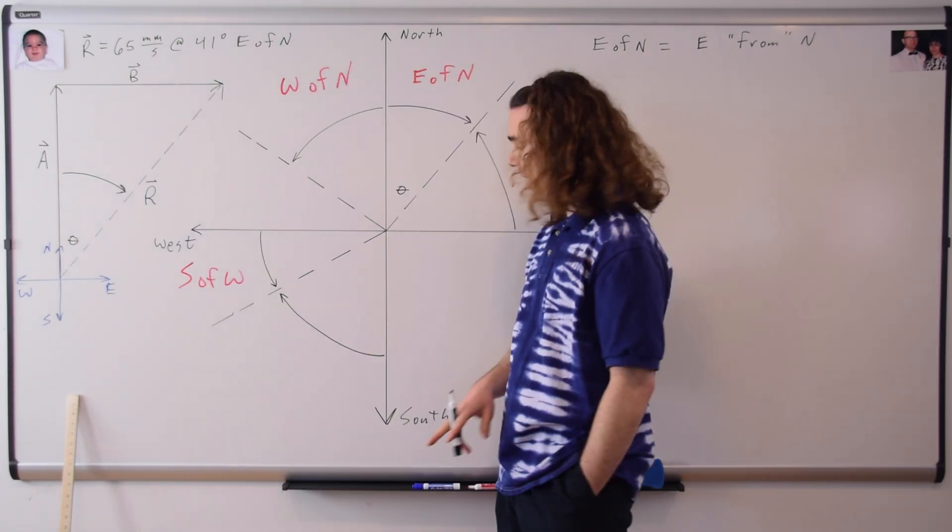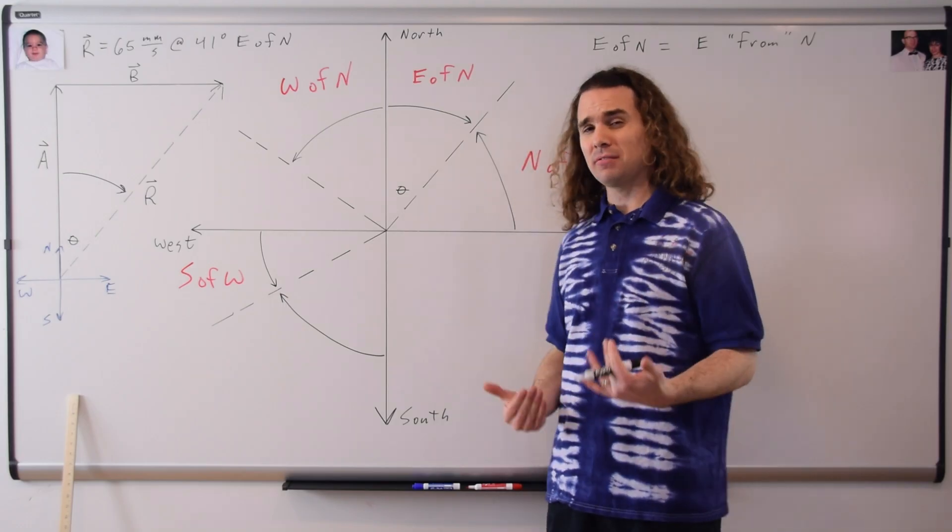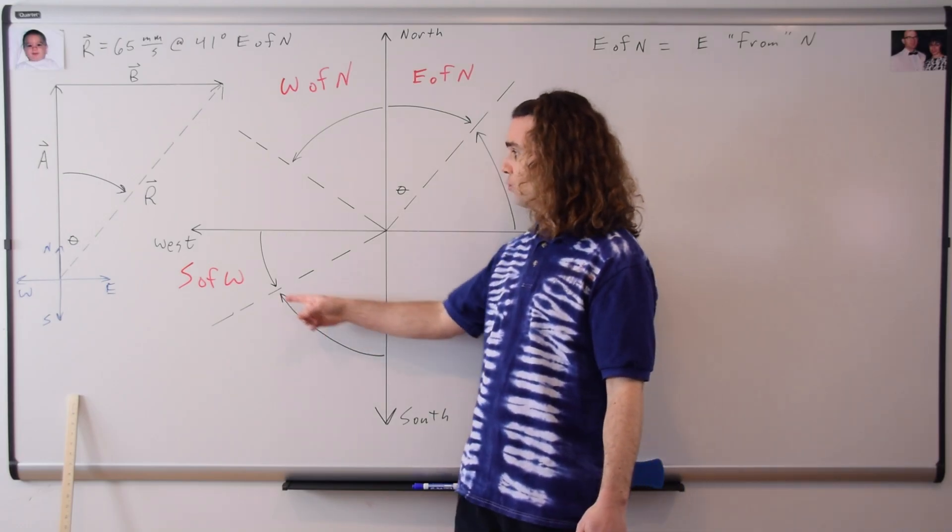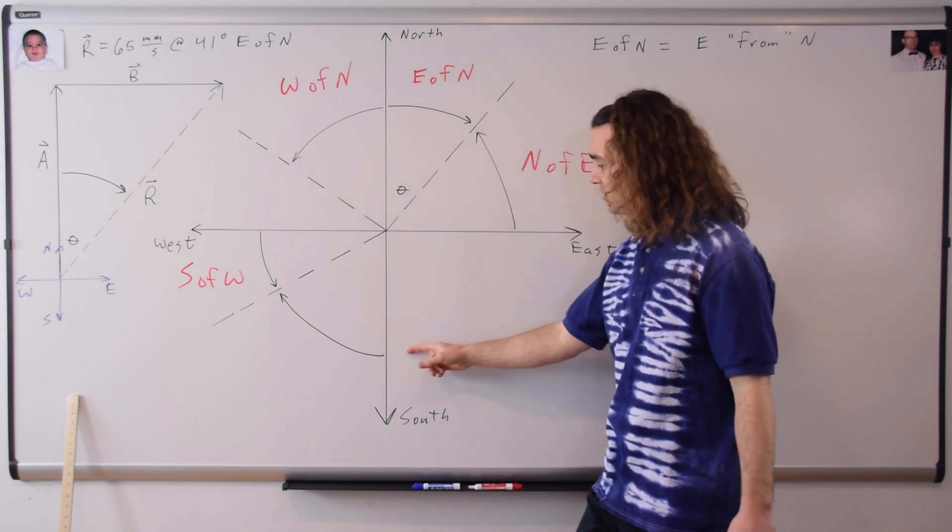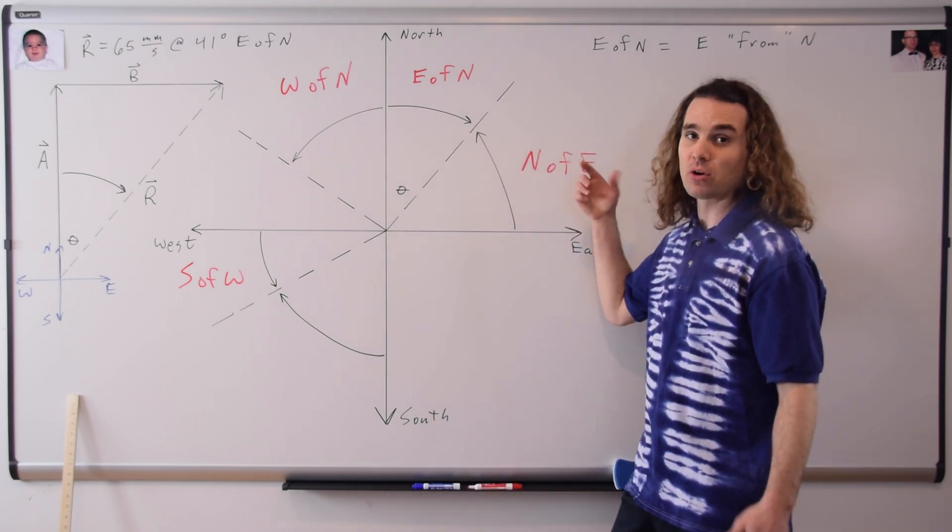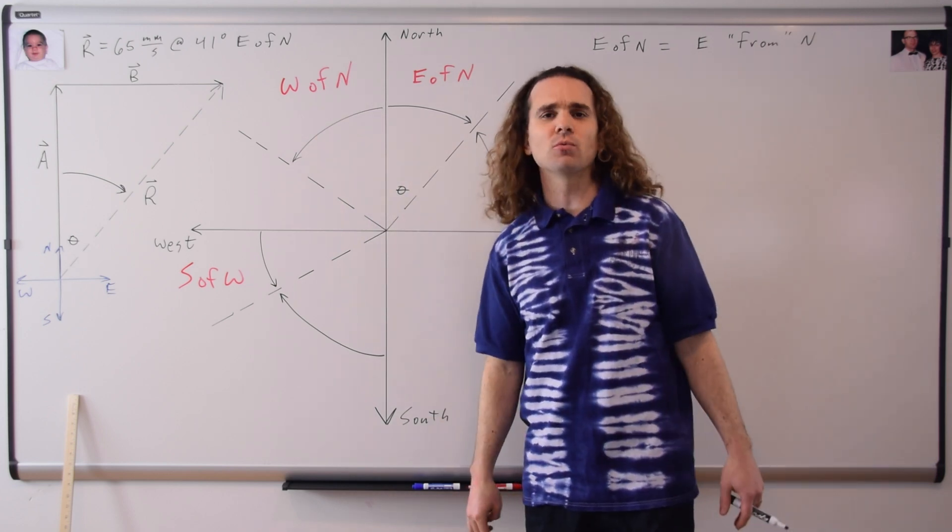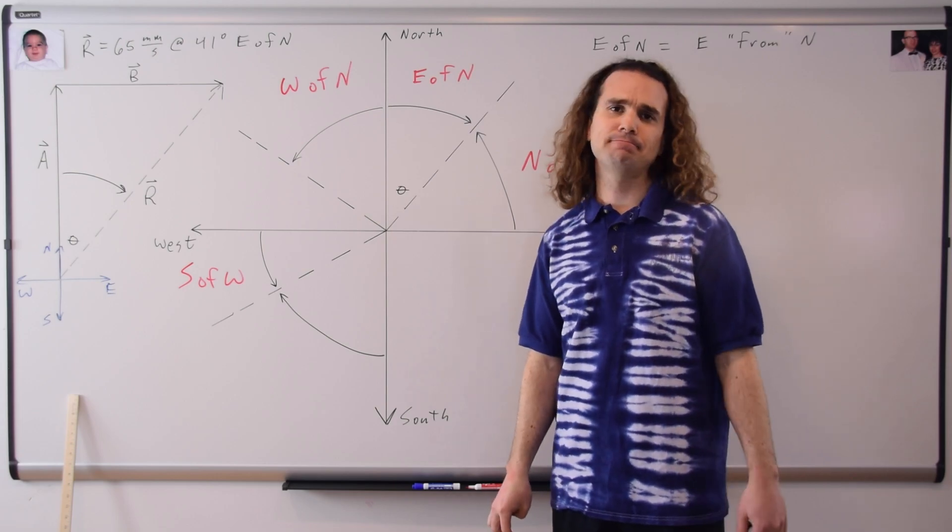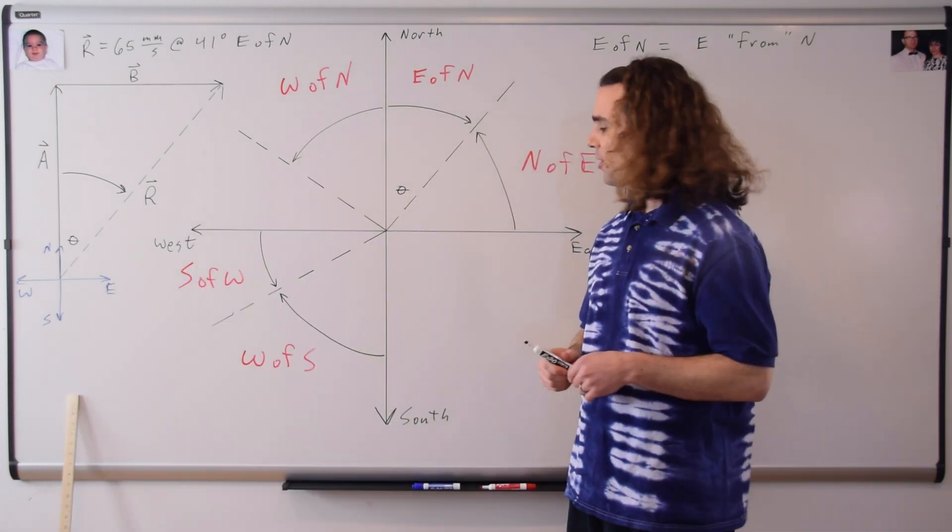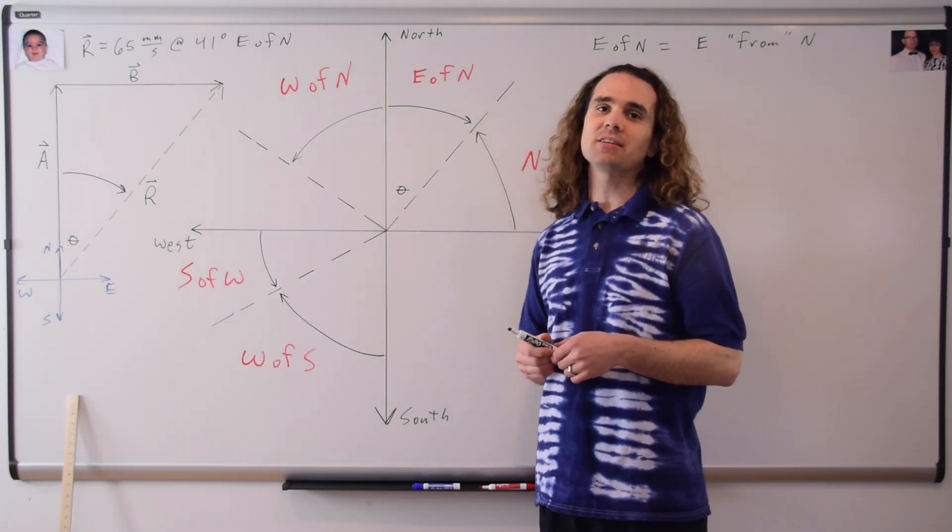And Bobby, how would we describe this angle? North of south. Bobby, actually, north of south doesn't work. This direction would be north of south, but this direction also would be northward from south. So that doesn't really work. So Bobby, please try again. Yeah, sorry. West of south. There you go, Bobby. Yes, that is west of south.